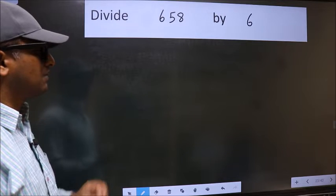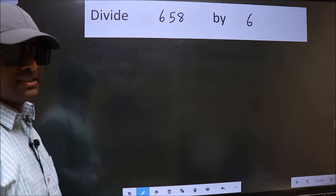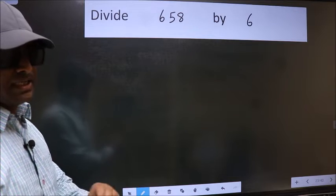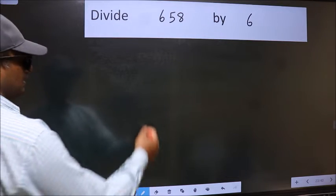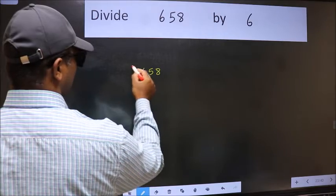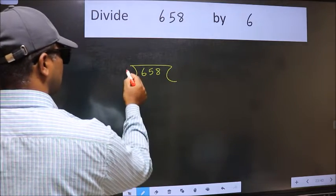Divide 658 by 6. To do this division we should frame it in this way: 658 here and 6 here.